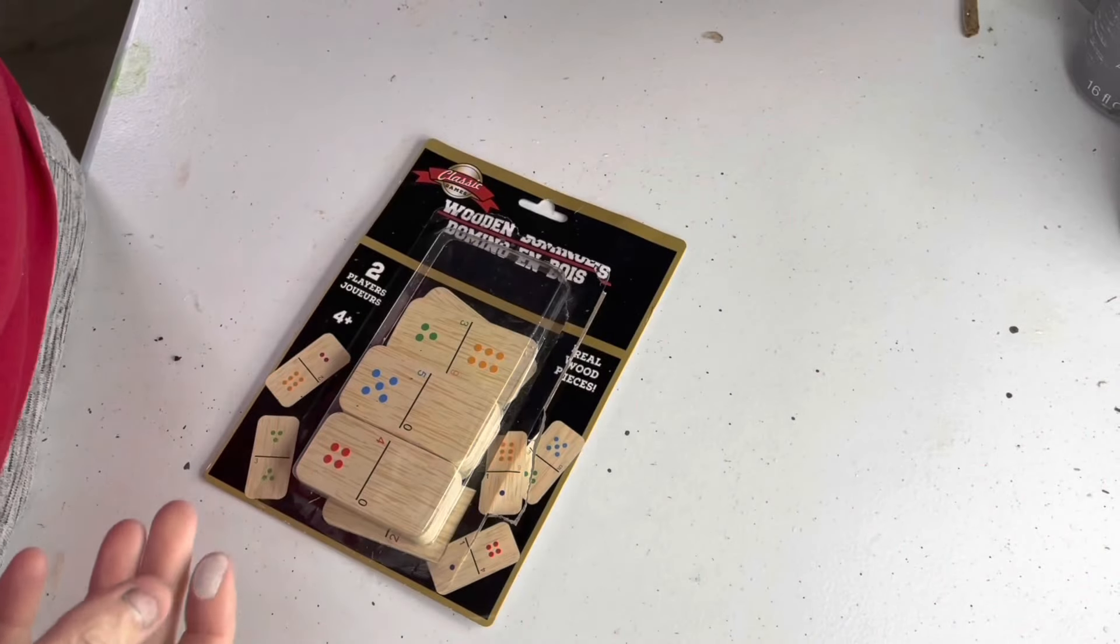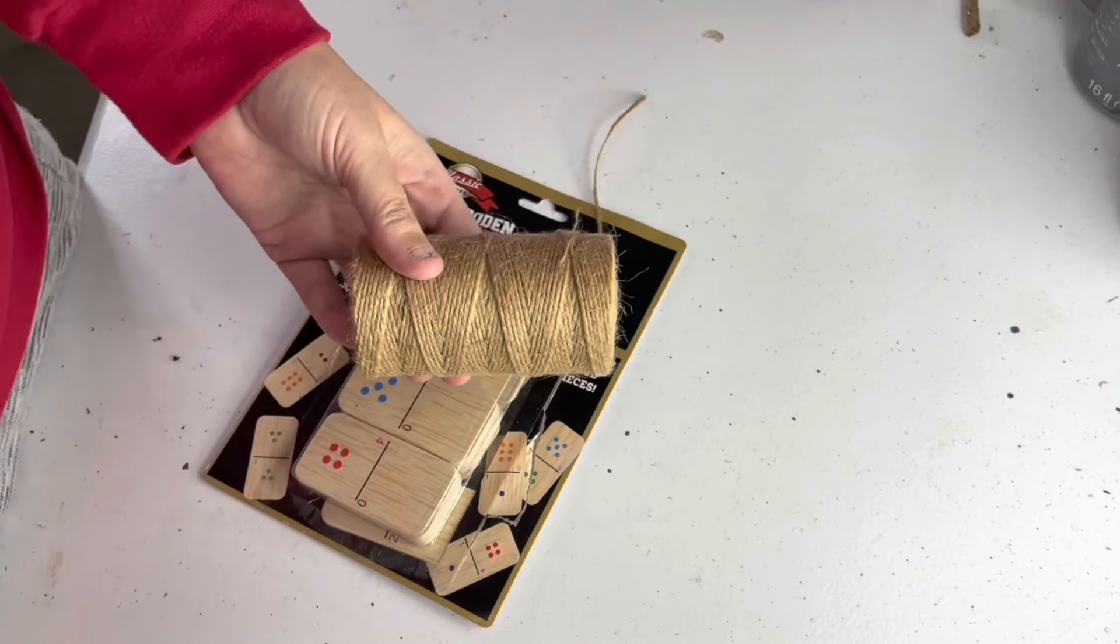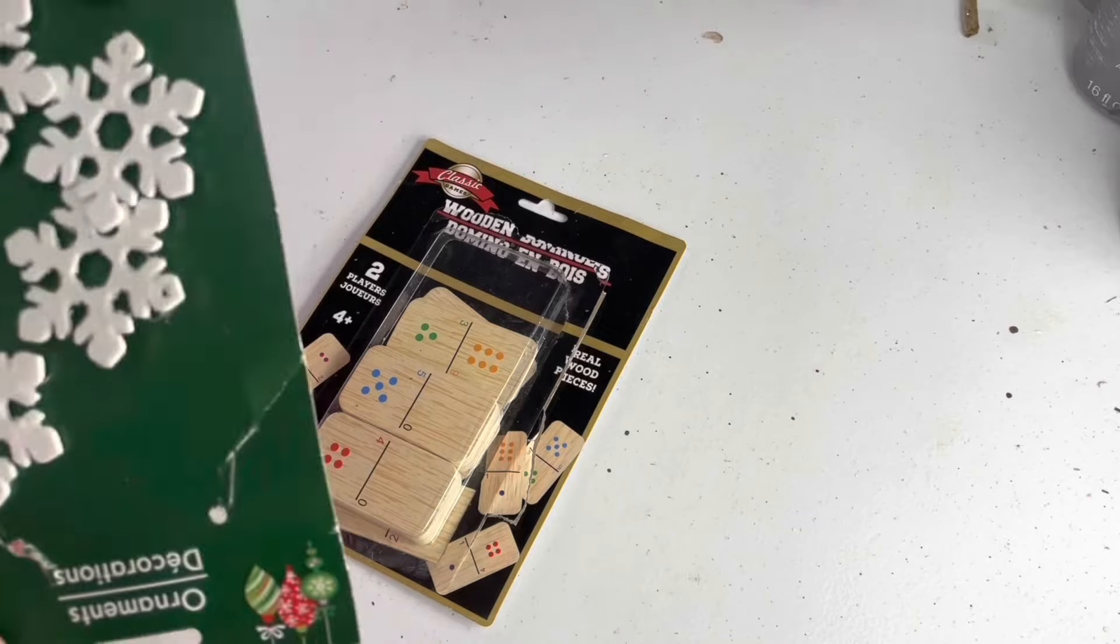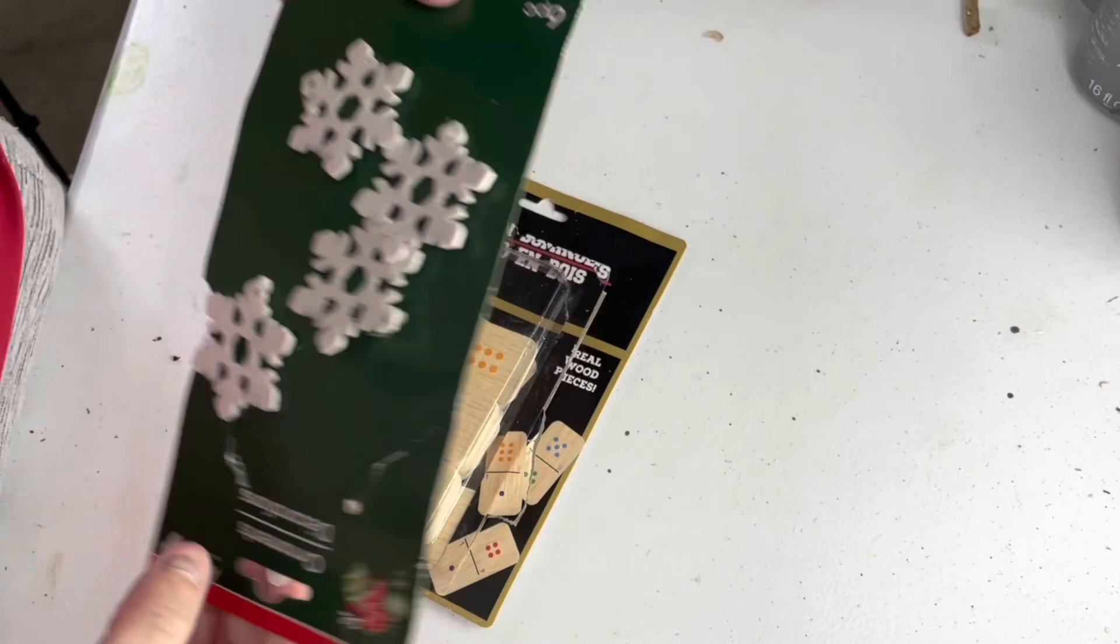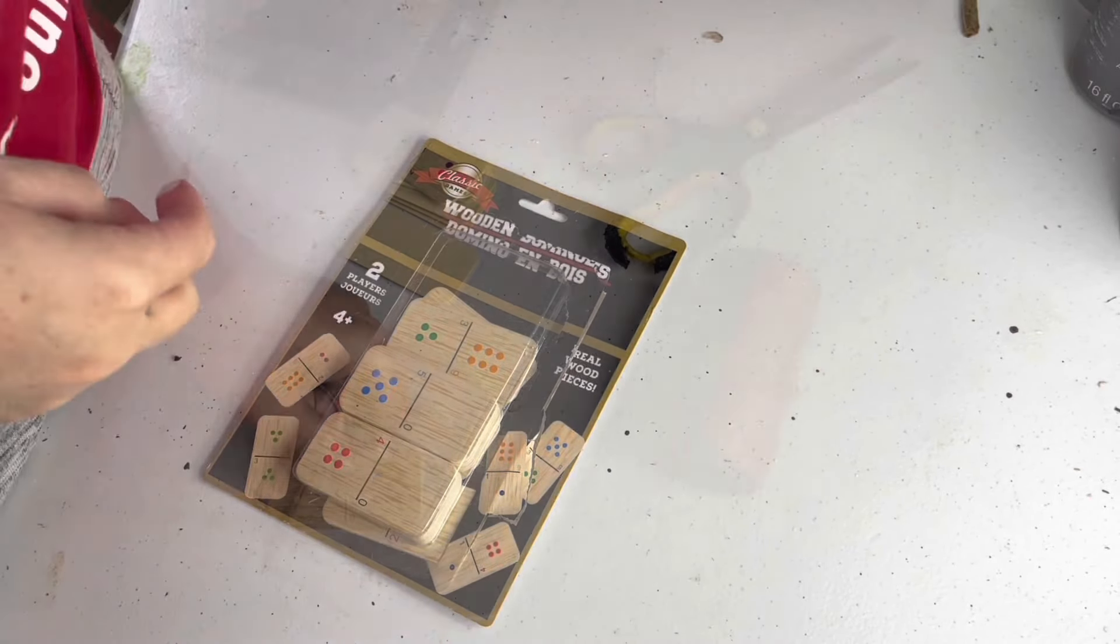I started with a pack of these little wooden dominoes, twine, and then these little snowflake ornaments that come in a pack of six so if you want to make 12 you'd get two packs of those.